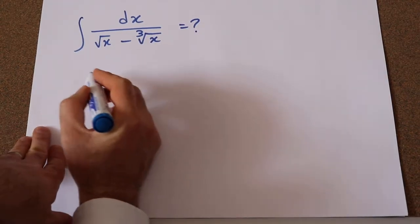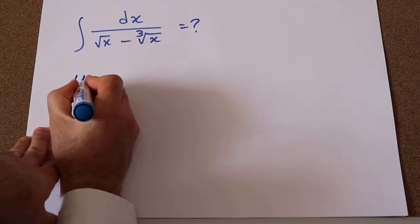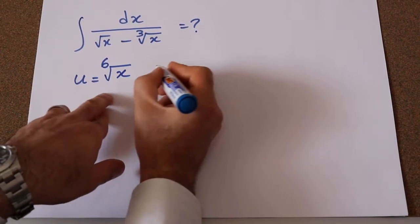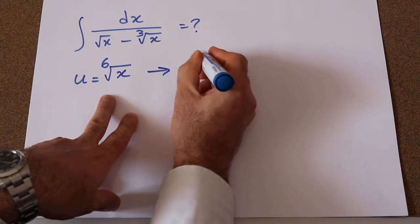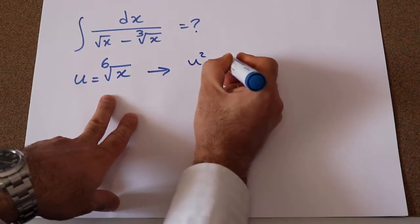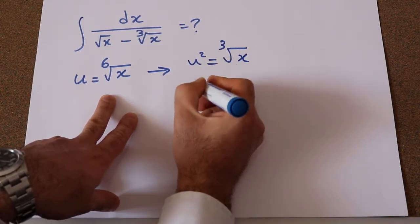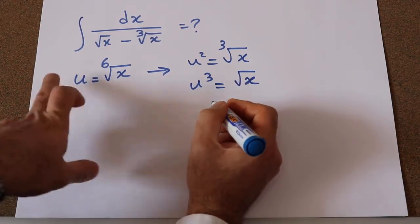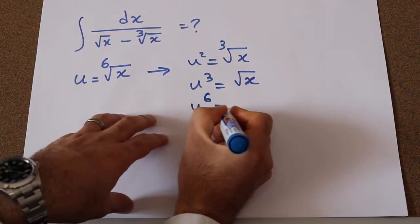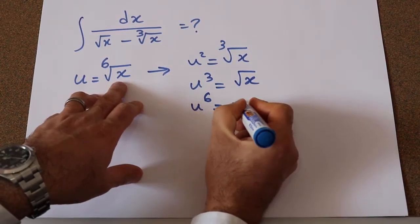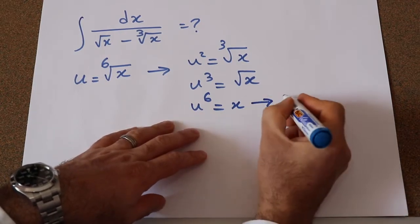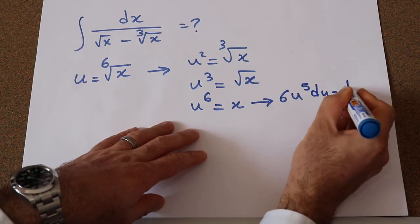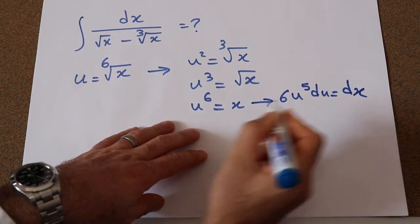To solve this integral, I first define the parameter u as the 6th root of x. Therefore, u² will be equal to the square root of x, u³ will be equal to the cube root of x, and u⁶ will be equal to x. Therefore, 6u⁵du will be equal to dx.